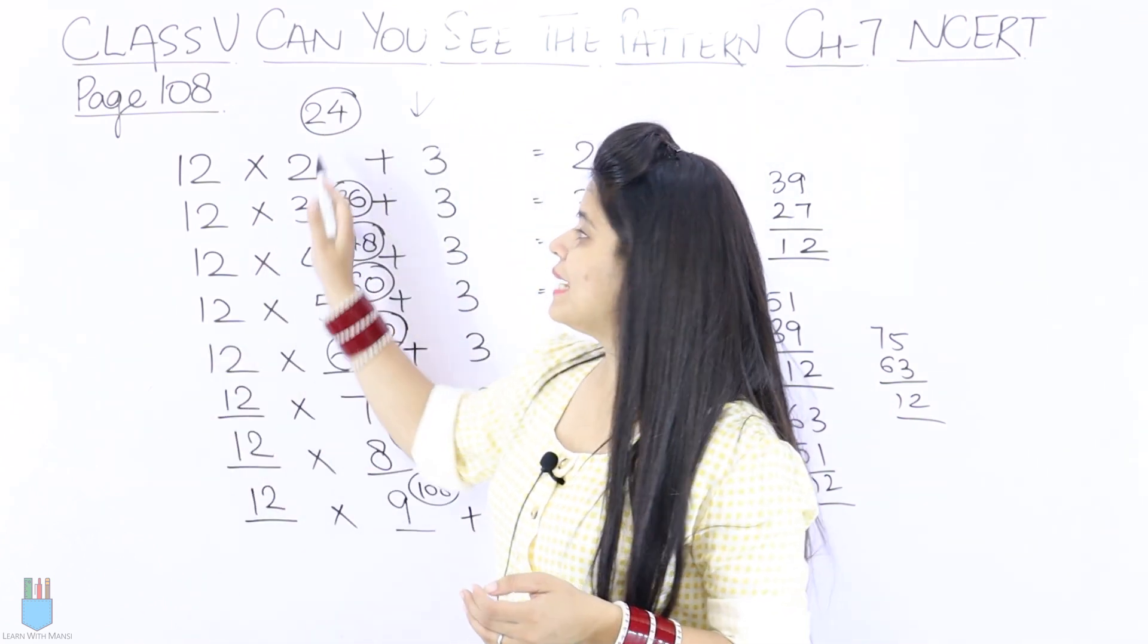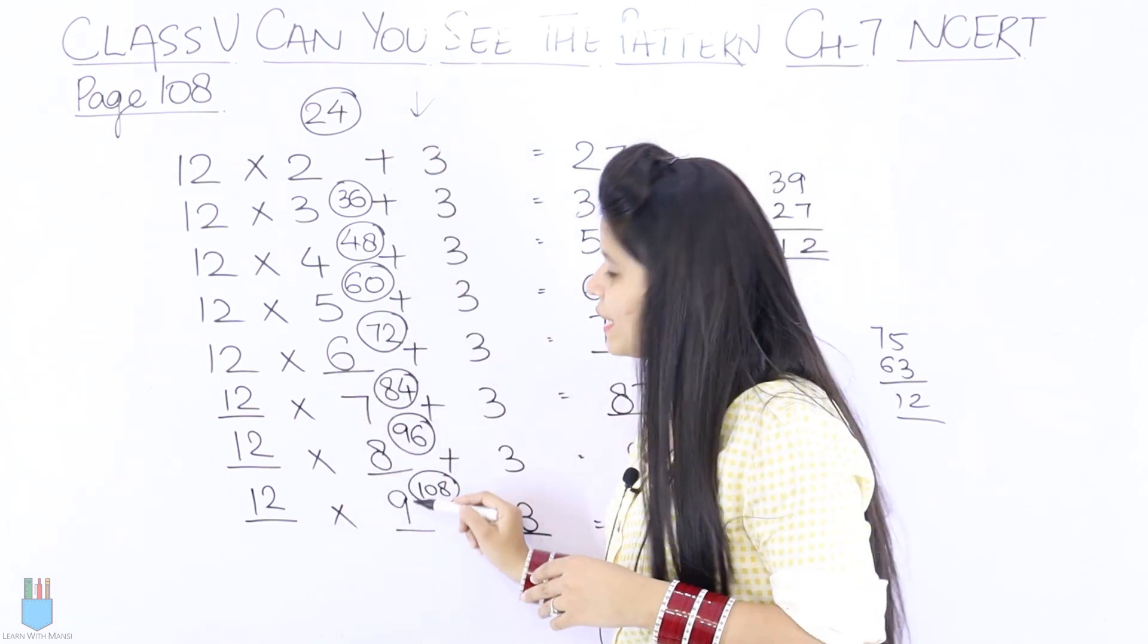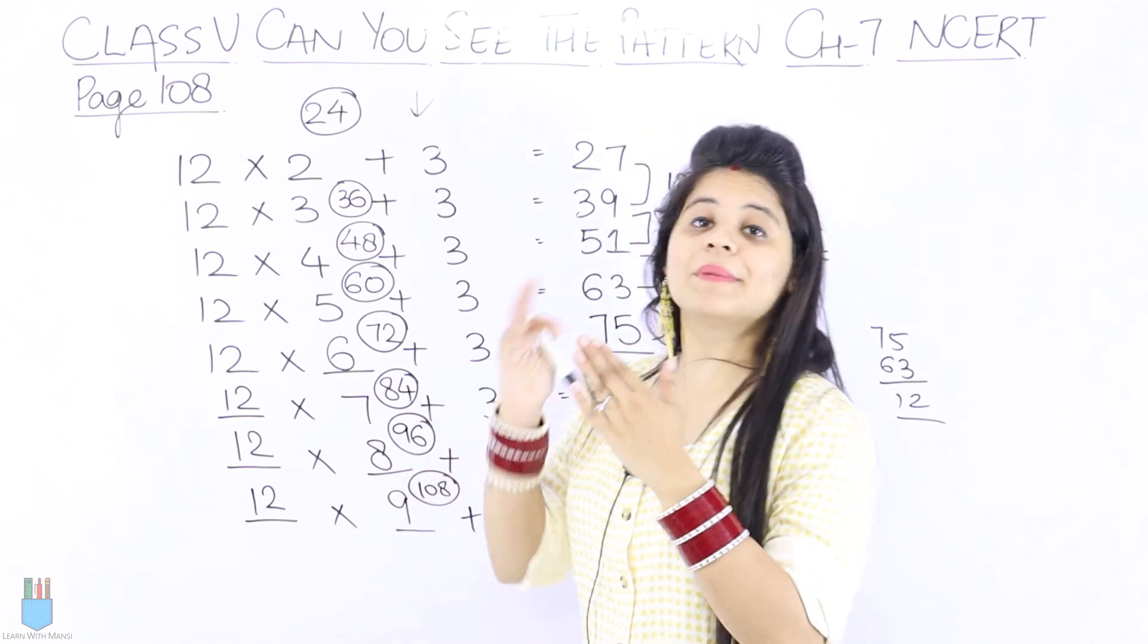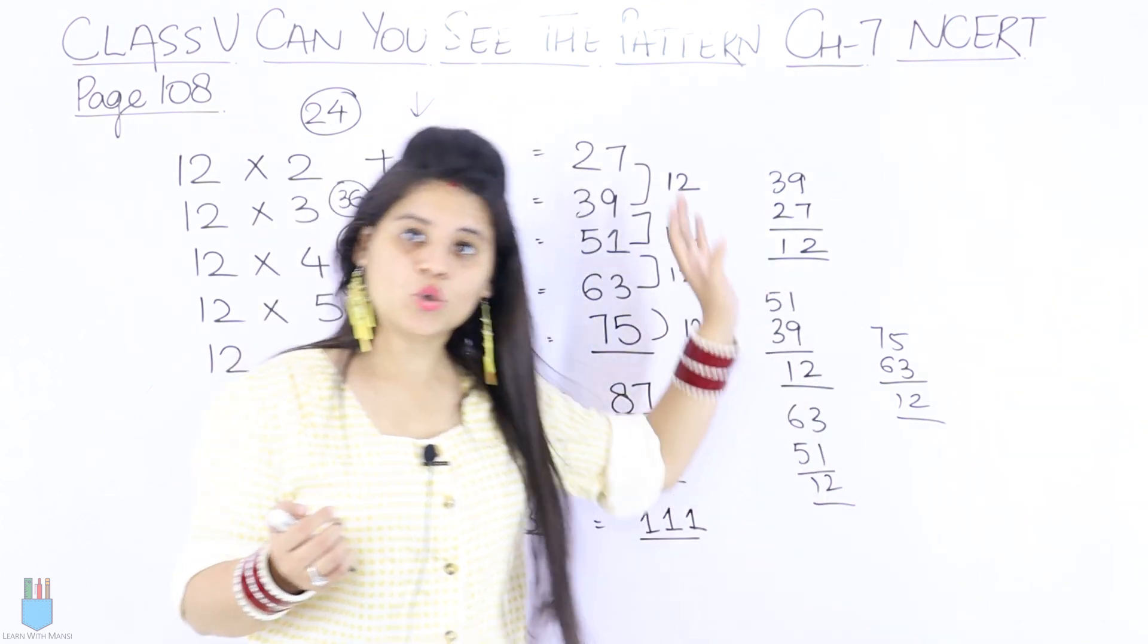So you will see that everywhere the difference is 12. Now you will think, when we do 12 table, but here we have done plus 3, then why is the difference 12? That is because we have added to every number 3. If you see this table of 12, the difference in each digit is the same, and it will be throughout.